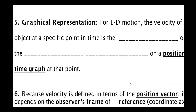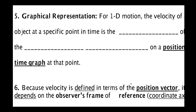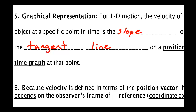Sometimes rather than having a function you're given data in terms of a graph. This occurs in Logger Pro when we use video analysis to measure the location of an object. In that case, the velocity of an object at a specific point can be found from a position-time graph by finding the slope of the tangent line. I'll explain exactly what that means, and in another video I'll go into more detail on various types of graphs.